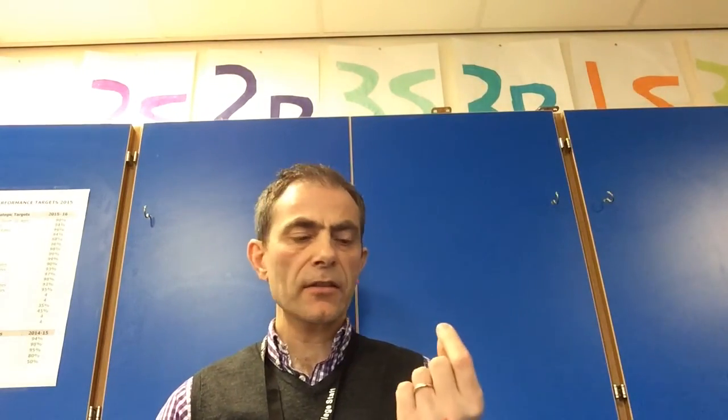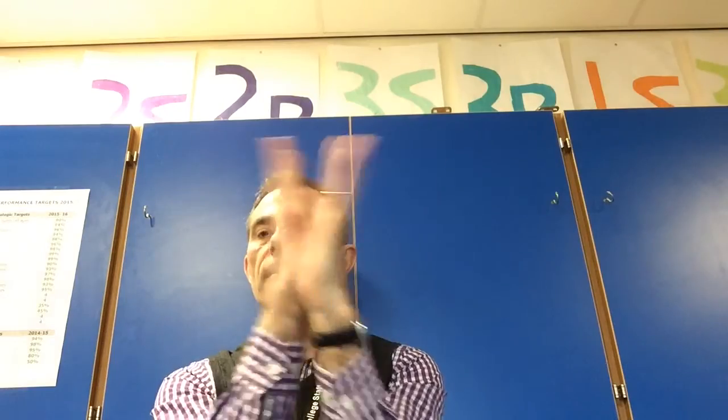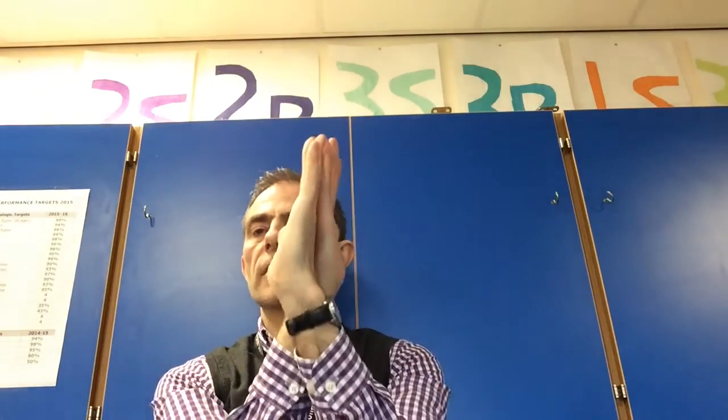You can also use this model to try and explain the relative strength of the two bonds. So sigma bond, remember, end-to-end overlap. And pi bonds, side-to-side overlap of those p-orbitals. So which is the strongest bond? Is it this one or is it this one?